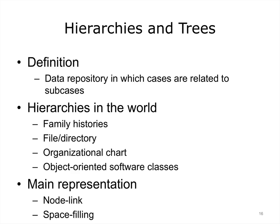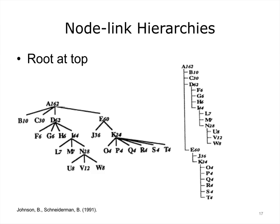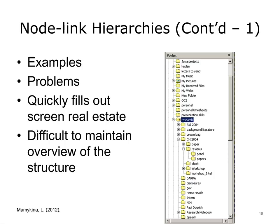The two main ways to represent hierarchical data types are node-link and space-filling. Node-link hierarchies are very common in diagrammatic representations. A common way to visualize file structures is essentially a node-link hierarchy. Some common problems with this visualization are that they quickly fill out screen real estate and that it is difficult to maintain an overview of the data.